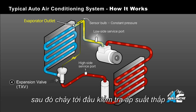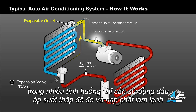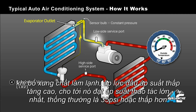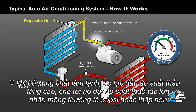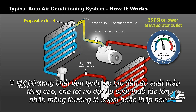It then flows through the low side service port, where in many cases it is being measured by a low side gauge only to charge the system. As refrigerant is added, the pressure on the low side rises until it reaches its maximum operating pressure, which is typically 35 psi or lower.